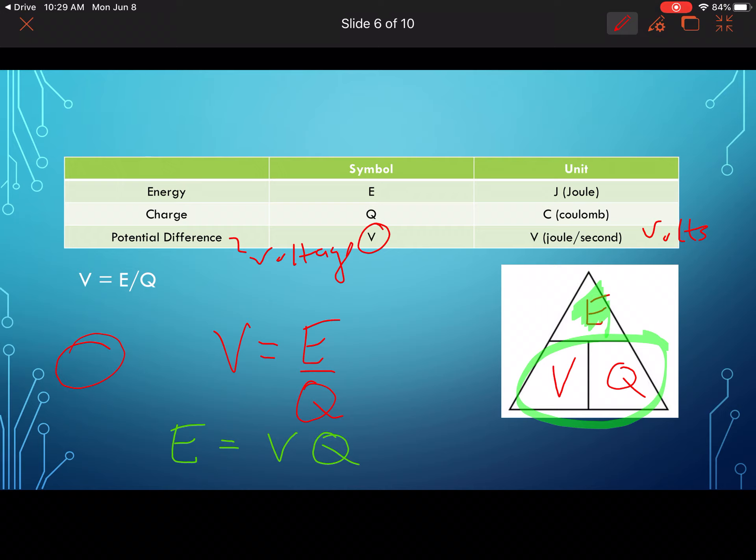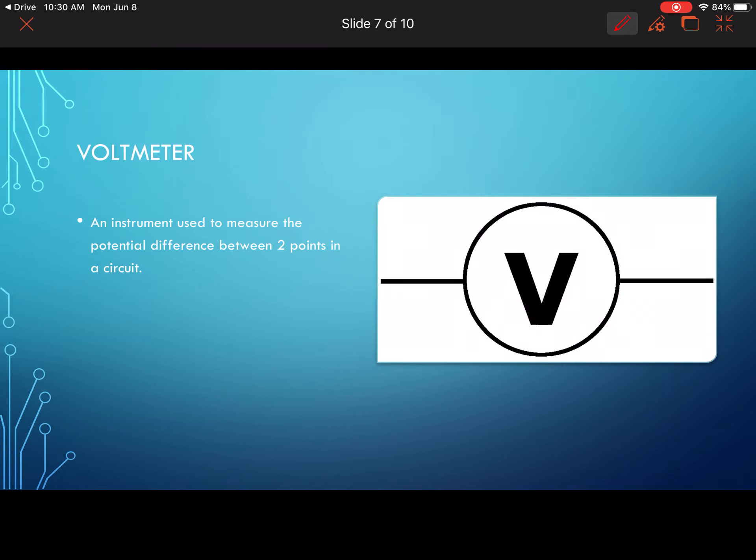Now you can also figure that out just using the algebra here, which I will do. So if I want to solve for E here, I got to get rid of that Q, so I'm going to multiply each side by Q. Now this one's cancelled and I have V times Q on the other side. So either way, obviously the algebra is always going to give you the right answer; the triangle thing will too. Use whatever method you want; it doesn't matter to me.